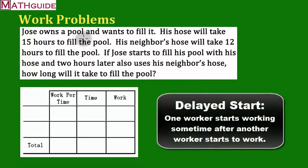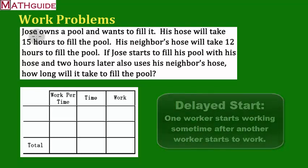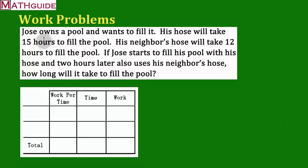Now, what makes this problem different than the last problem is that we have a delayed start for one of the hoses. So he starts to fill the pool with his hose. You can see this is the slower hose. It takes 15 hours to fill it, so it must have a weaker stream. His neighbor's hose is going to start two hours later. This is the hose that's obviously a thicker stream because it only takes 12 hours to fill the pool with that one. That's a bit of a complication, a bit of a wrinkle in this type of problem.